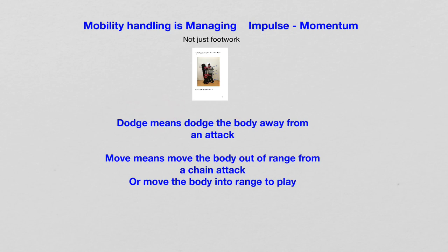Dodge simply means that when somebody throws a punch or strike, you handle it there and play there. These are two different things. One dodges if one can handle it. If one cannot handle it, one moves out, and then comes back — or decides to leave. This is the two keys of mobility handling in 1850's Wing Chun: knowing when to dodge and when to move out of range.